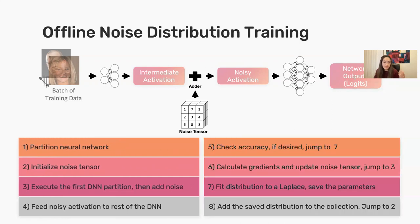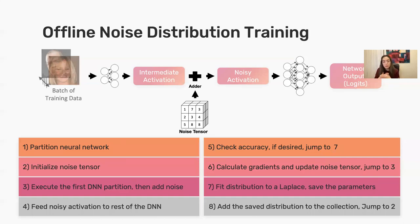At every set of iterations, we check the accuracy on a held-out validation set to see if we've reached a desired accuracy level. If we haven't, we go back, sample another batch of data, and continue training. But if we have, we fit a Laplace distribution to the noise tensor, collect the parameters of this Laplace distribution, and save them along with the order of the noise elements — creating and saving a tuple of distribution parameters and element orders.